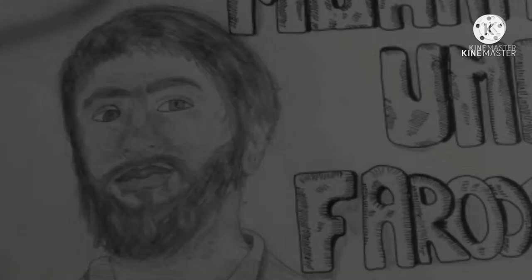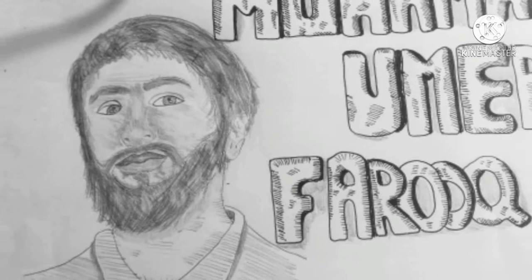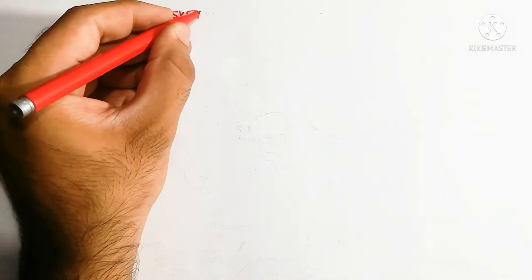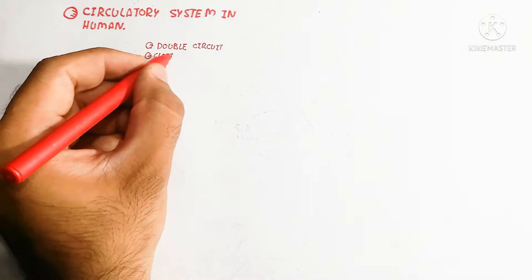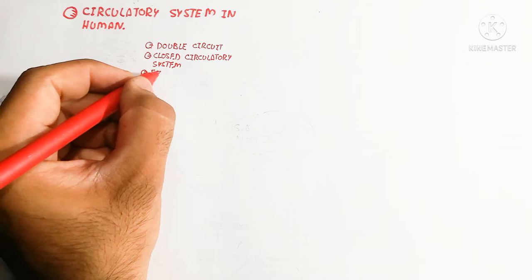Today we will discuss the circulatory system in humans. The human circulatory system is a double-circuit circulatory system as well as a closed circulatory system. A four-chamber heart is present in human beings, or we can say in mammals. Four chambers means two atria and two ventricles, and a septum — the atrioventricular septum — is present.